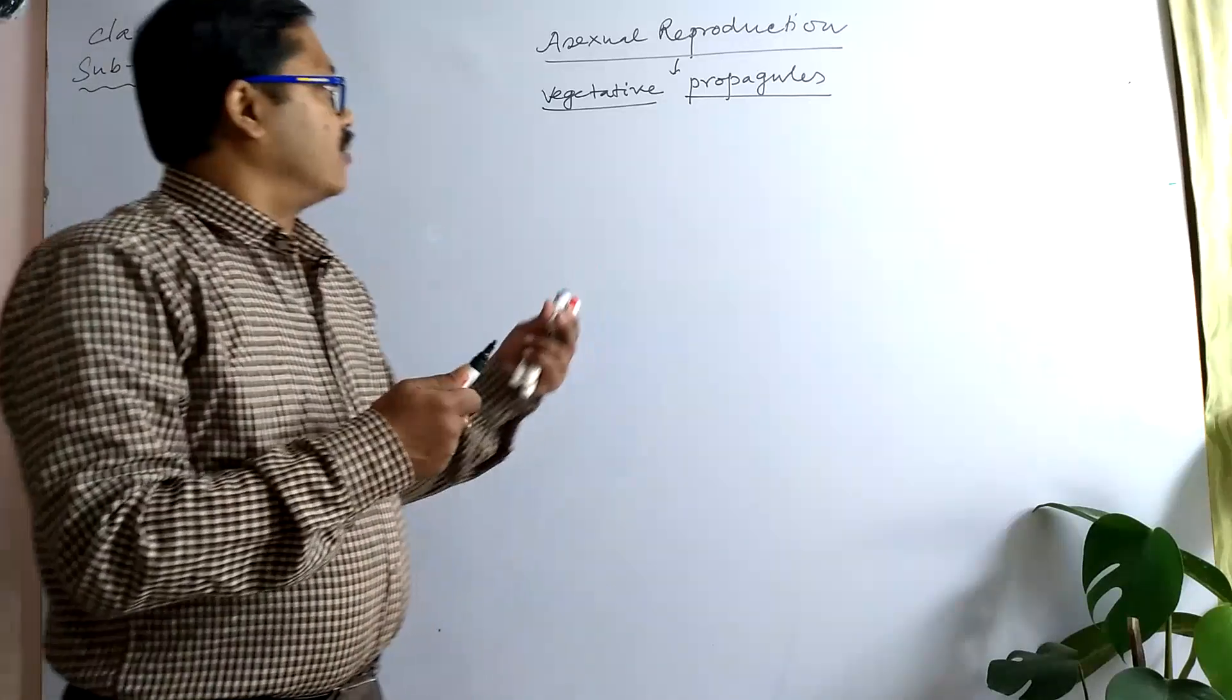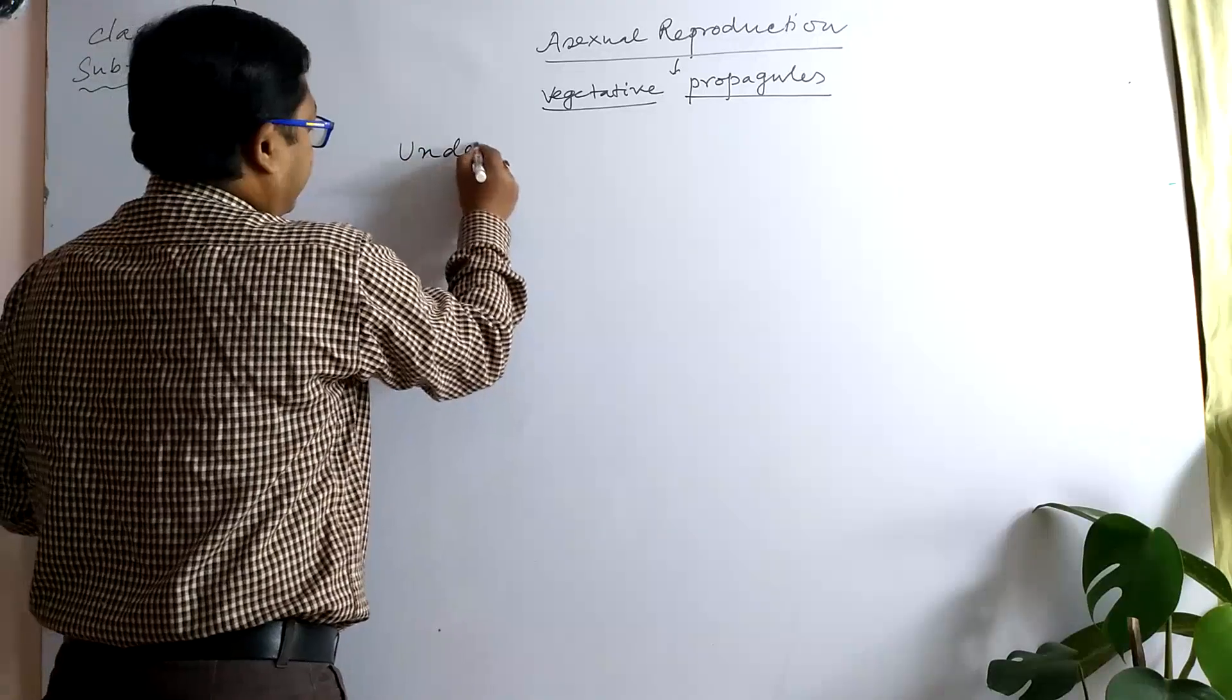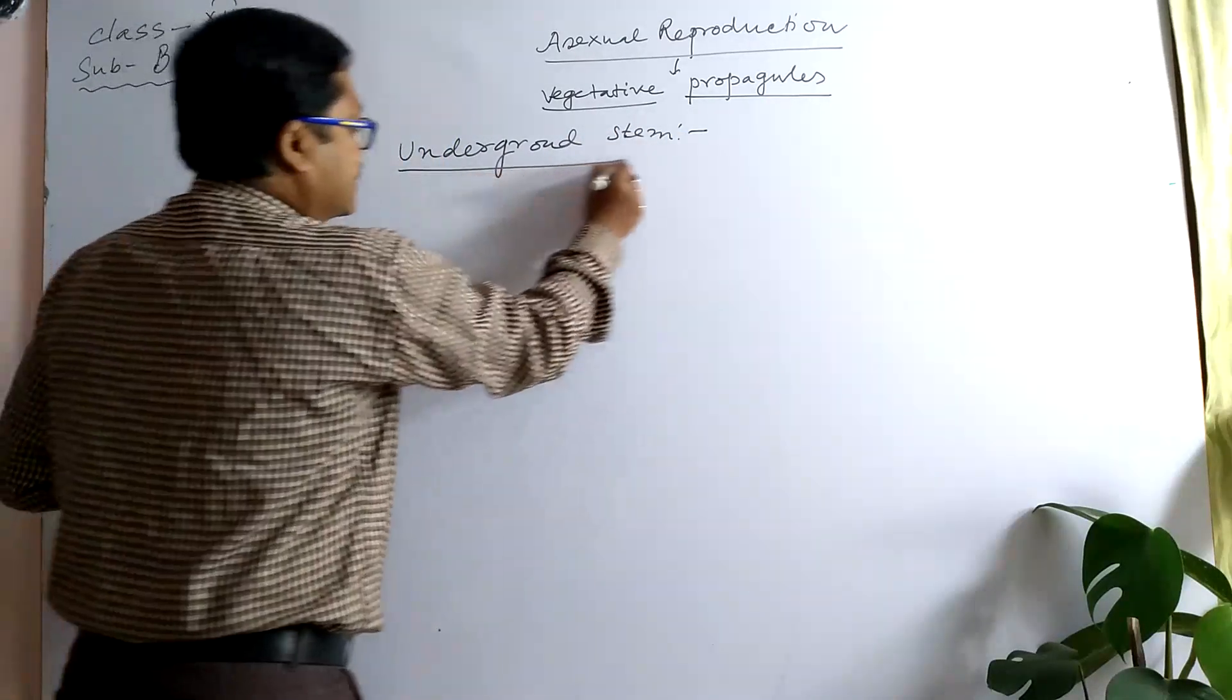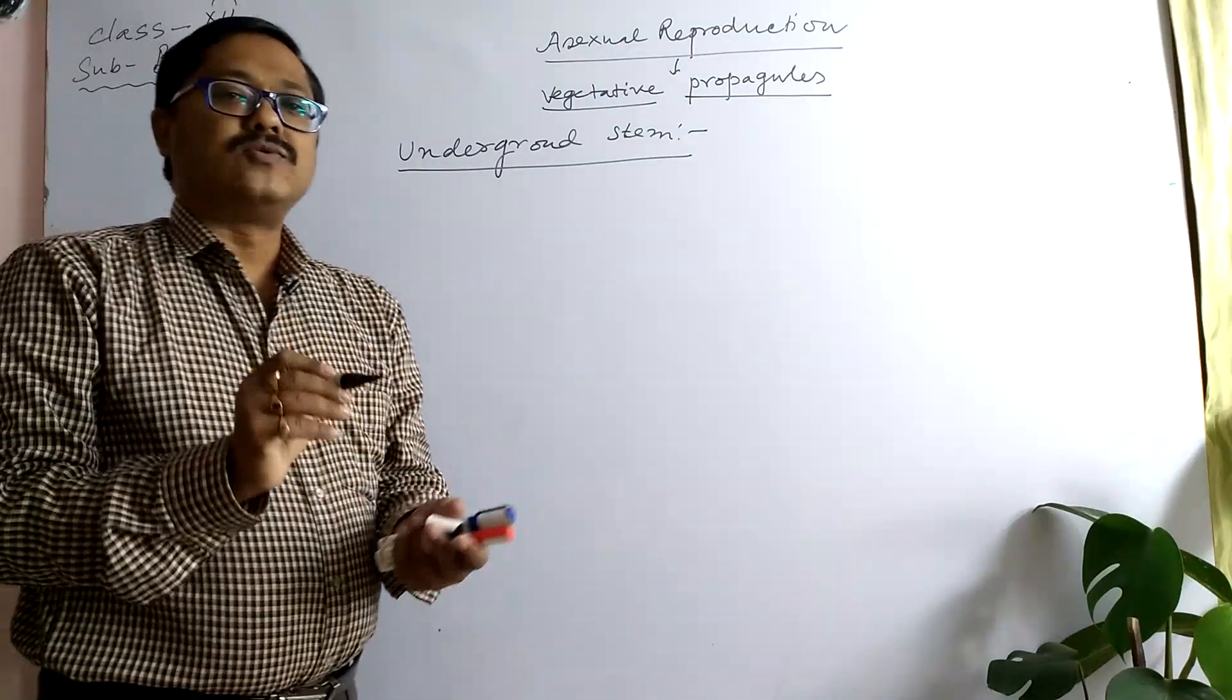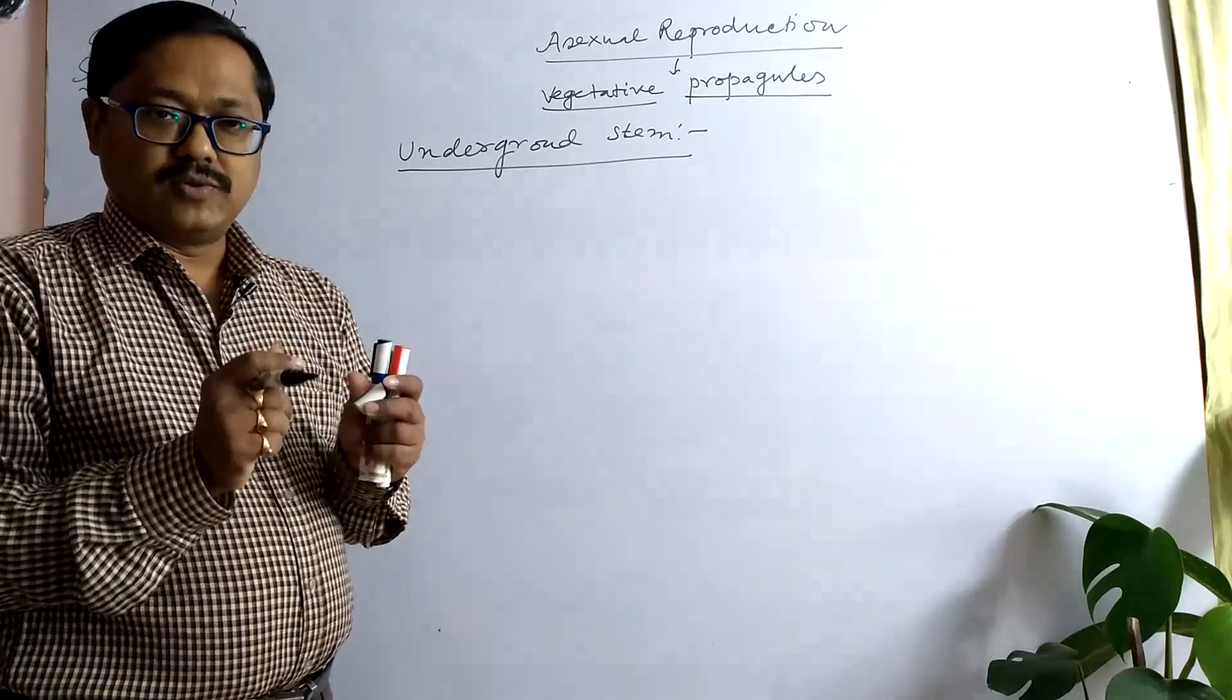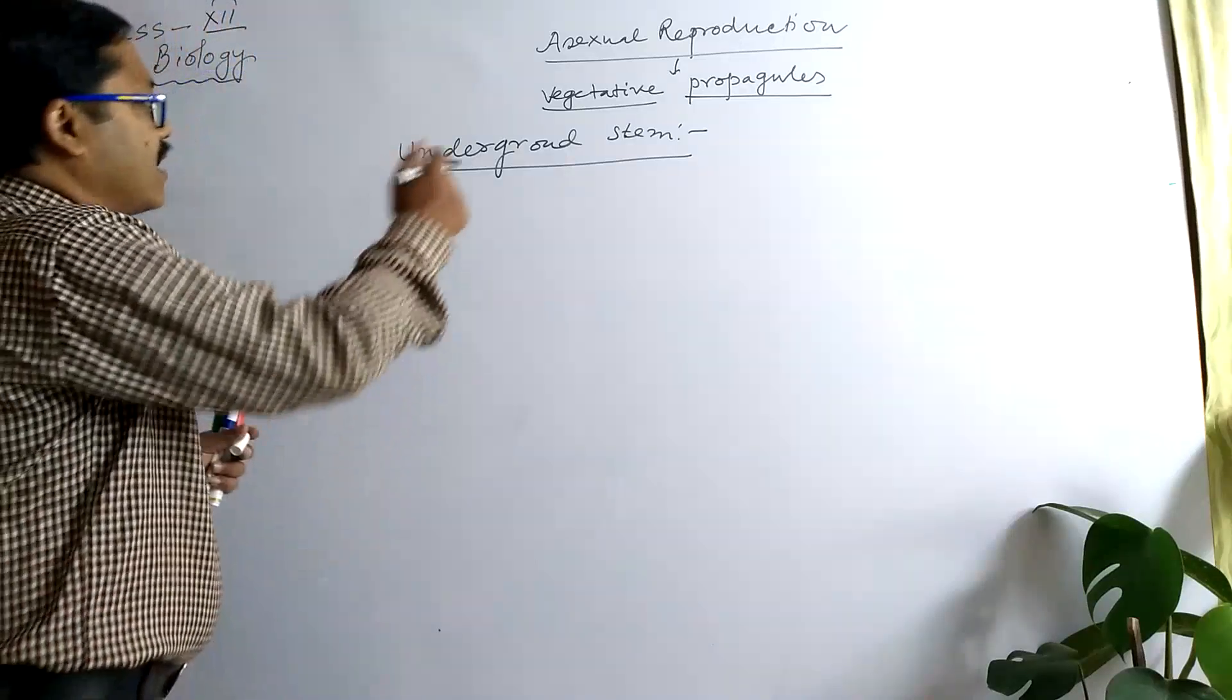We are going to talk about the first part, the underground stem. Several plants possess stems that grow within the soil and they enlarge due to the accumulation of food. Besides food storage, they also help plant propagation.